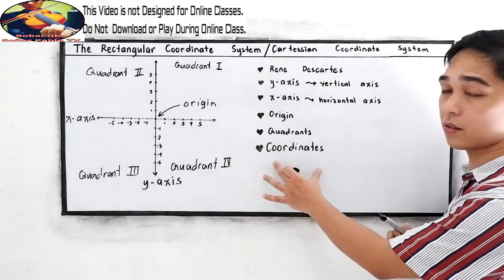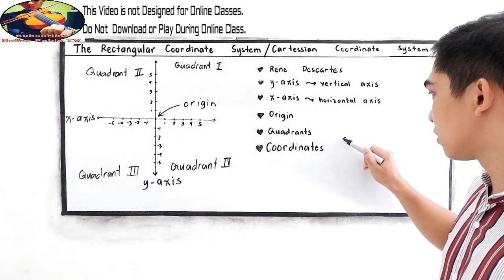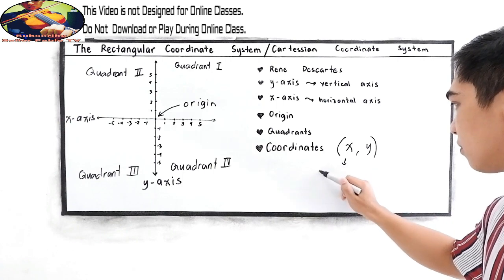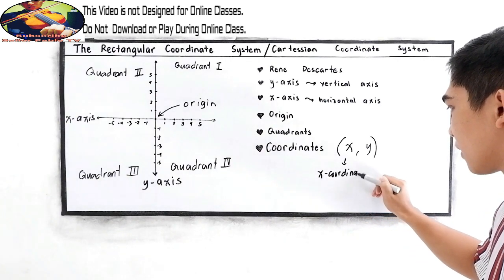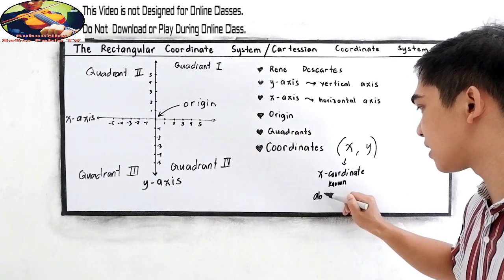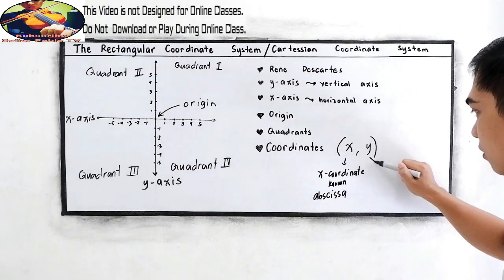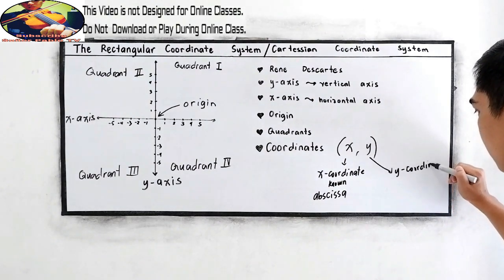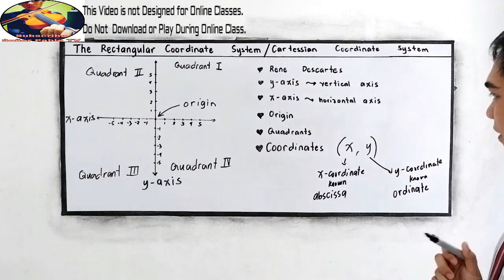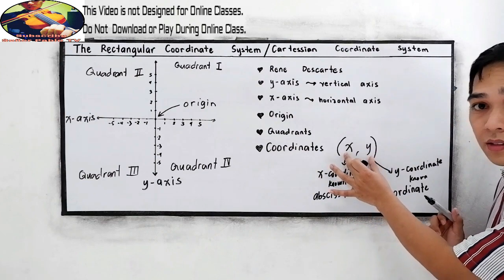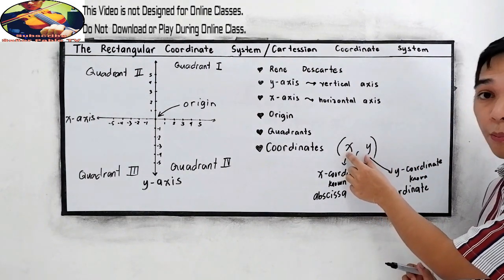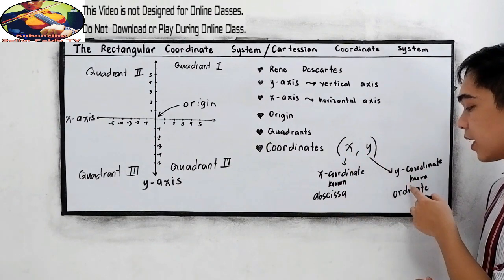Next, we have the coordinates. Our coordinates are composed of the x-coordinate and the y-coordinate. The x-coordinate is also known as the abscissa, and the y-coordinate is also known as the ordinate. Take note that our coordinates are composed of x and y — so it is an ordered pair, meaning it is composed of two numbers: the x-coordinate, or abscissa, and the y-coordinate, or ordinate.